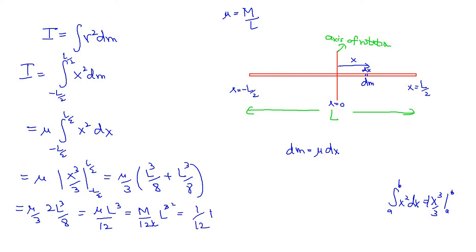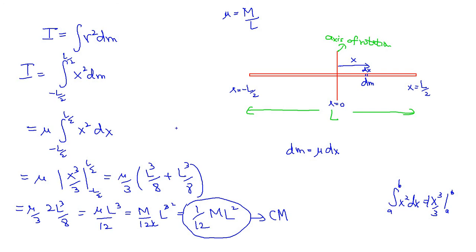So the moment of inertia around the center of mass is I = (1/12)ML². That's how you derive the moment of inertia around the center of mass for a uniform rod.